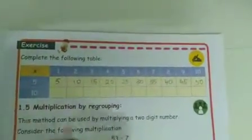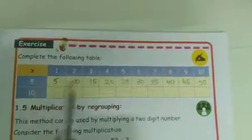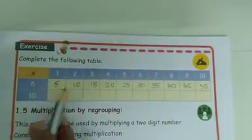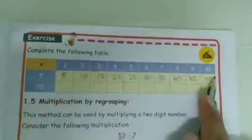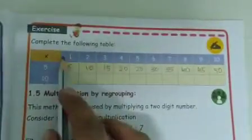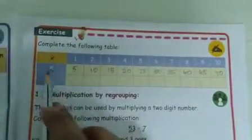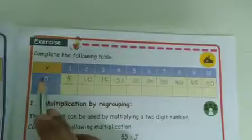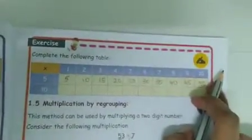Last time, the maximum number of students wrote the wrong answer. This is the correct step: 1 five is 5, 2 fives are 10, 3 fives are 15 — this is how we want to write the answer.